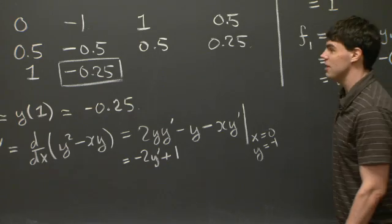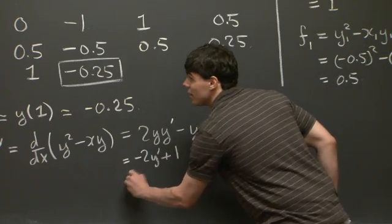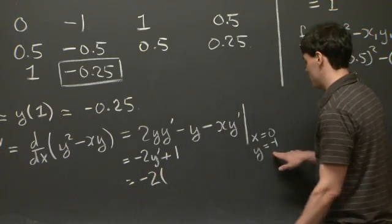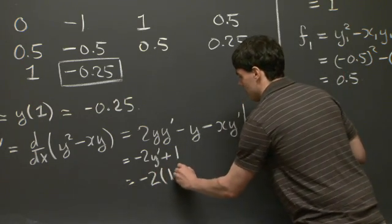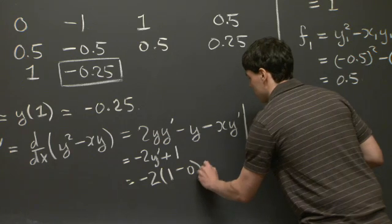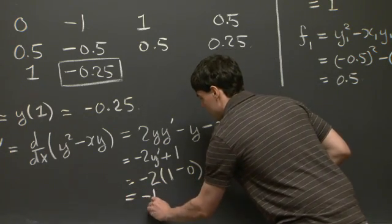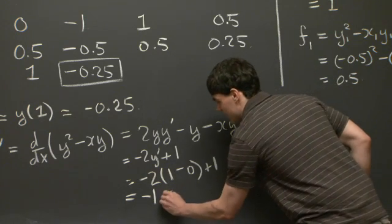And y' specifically is going to be y² - xy. So we get -2·y² is going to be -2·1 minus 0 plus 1. So together, this is going to give us -1. And we note that this is less than 0.